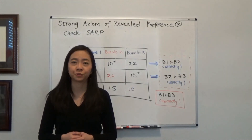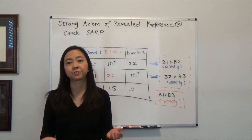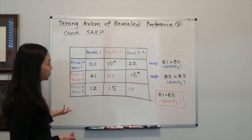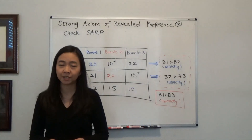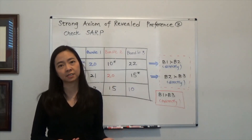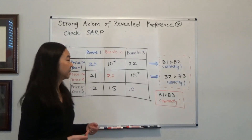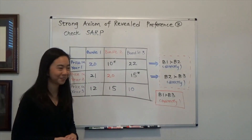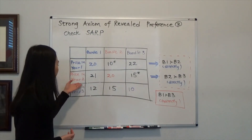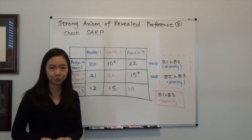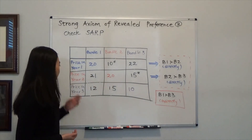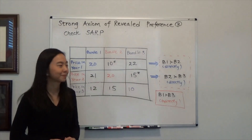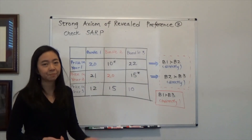In particular, we're going to see whether there is a violation of SARP. Suppose we have a consumer and we have the consumption data of this consumer for three years. In year one, this consumer purchased bundle one. In year two, the consumer purchased bundle two. And in year three, this consumer purchased bundle three. So we have three different bundles.